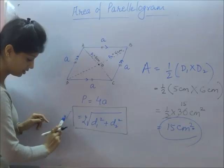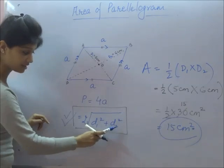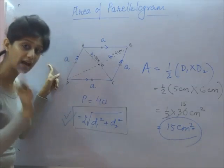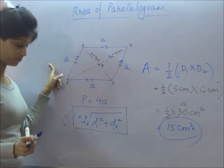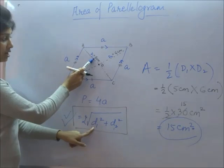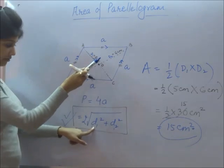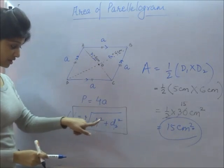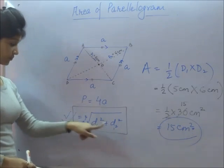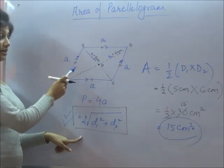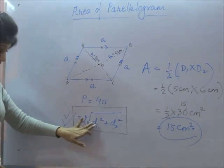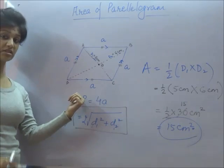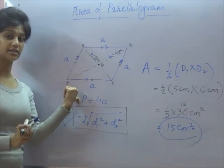At that time, remember: if you have the diagonal information for a rhombus, you can calculate the perimeter. With D1 equal to 5 and D2 equal to 6, you calculate D1 squared, that is 25, plus D2 squared, that is 36, take the square root of that sum, and multiply by 2 to get the answer. So even if the sides are missing, you can calculate the perimeter for a rhombus using the diagonals.